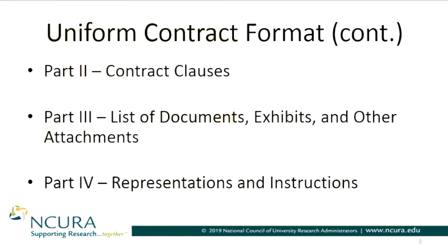Part Three is your list of documents, exhibits, and other attachments. This may also be a reiteration of the title of your contract, date, and number of pages for each of your documents. It also clarifies any definitions specific to your project or organization. Having an index of defined terms — or a dictionary of defined terms — is really helpful to put in this particular section.